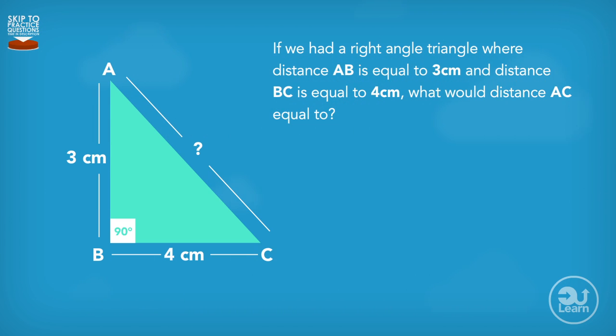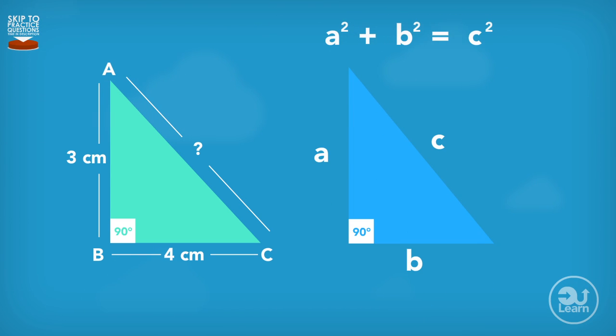What we do first is identify what distances we have in relation to the formula and what distances we don't. Going back to our right angle with the letters, we can see we have the known values for distances A and B, but no C distance for the hypotenuse.